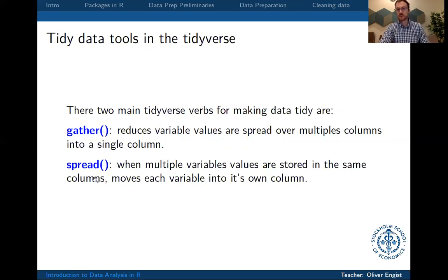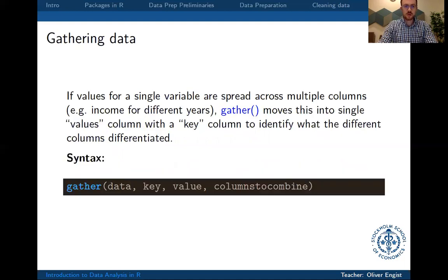And the other form of data that we often come across is data where the variable name is basically provided in one column. And then you have an indicator in the column that tells you what is the variable, and then the next column provides the value for that variable. And we'll just look at an example quickly. So gather corresponds basically to the reshape function in Stata, where we move from the wide format to the long format.